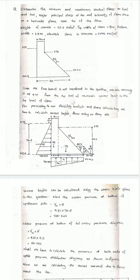Let's ask the question: determine the minimum and maximum vertical stress at heel and toe, the major principal stress at toe, and the intensity of shear stress on a horizontal plane near the toe of the dam. We have to find the maximum vertical stress at the heel and toe.